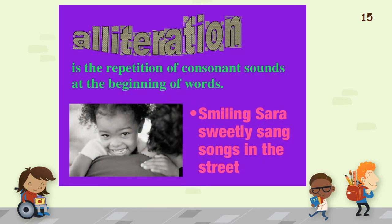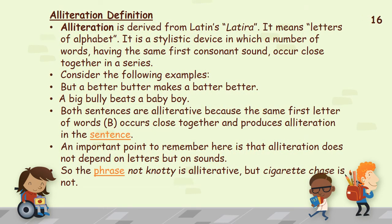Now we are going to talk about alliteration, which is the repetition of consonant sounds at the beginning of words. For example: 'Smiling Sara sweetly sang songs in the street' — the sound 'S' is very obvious in all the words. Alliteration is derived from the Latin word 'litera,' meaning letters of the alphabet. It is a stylistic device in which a number of words having the same first consonant sound occur close together in a series. Consider: 'But a better butter makes a better batter' and 'A big bully beats a baby boy.' Both are alliterative because the first letter 'B' occurs close together throughout.